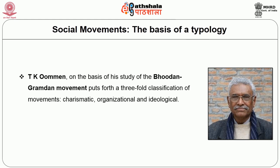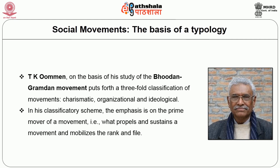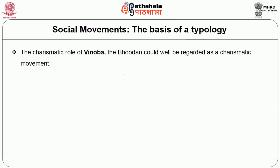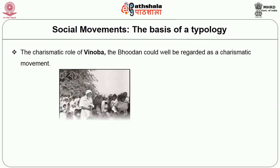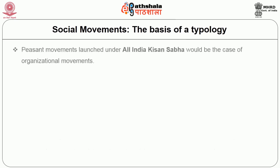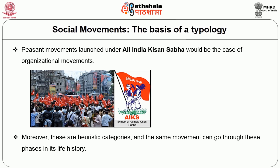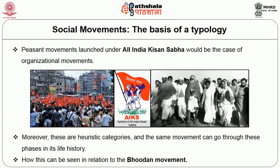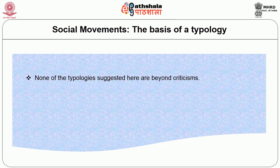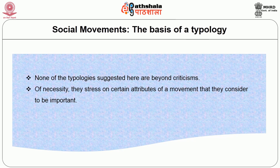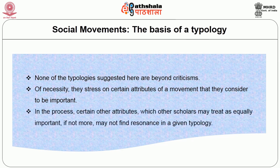In this classificatory scheme, the emphasis is on the prime mover of a movement — that is, what propels and sustains a movement and mobilizes the rank and file. For example, given the charismatic role of Vinoba, the Bhoodan movement could well be regarded as a charismatic movement. The Naxalwari movement on the other hand would be an example of an ideological movement. Peasant movements launched under the All India Kisan Sabha would be the case of organizational movements. Moreover, these are heuristic categories, and the same movement can go through these phases in its life history. We should also remember that none of the typologies suggested are beyond criticism; they stress on certain attributes of a movement, and certain other attributes which other scholars may treat as equally important may not find resonance in a given typology.